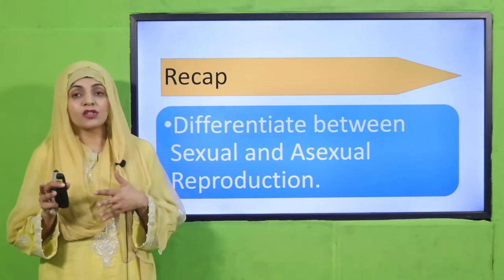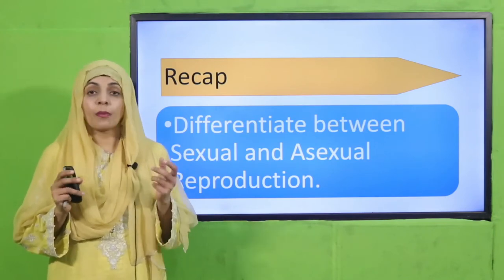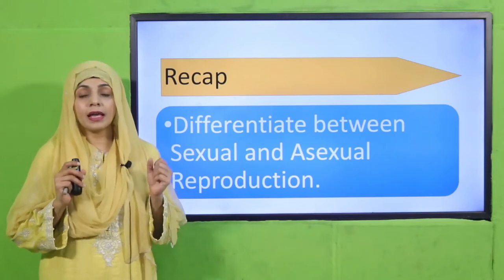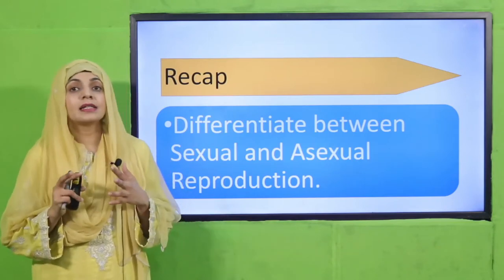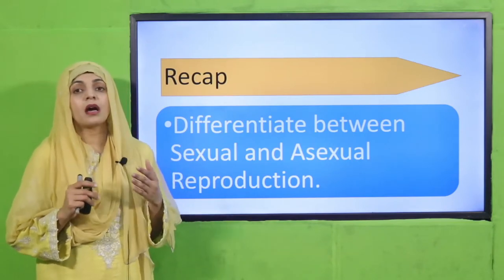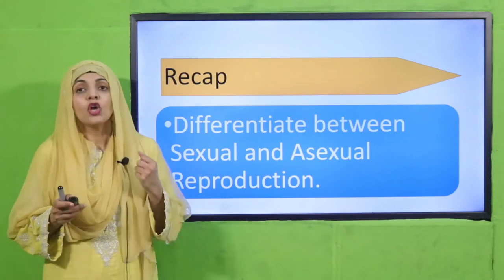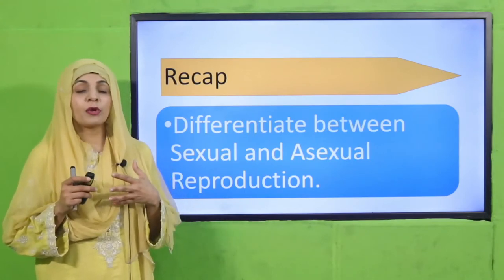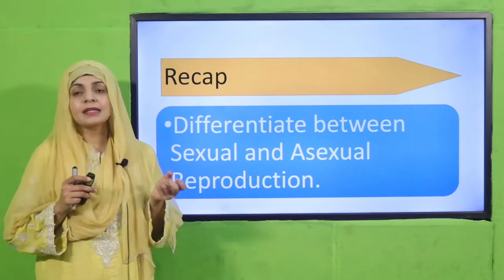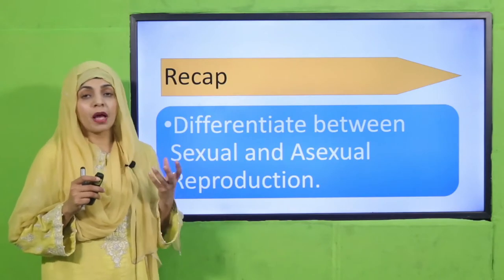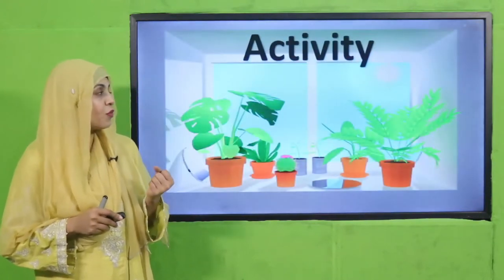In sexual reproduction, more time is required and fewer plants grow from seeds. In asexual reproduction, the resultant plants are copies of their parents, while in sexual reproduction there is slight variation. Examples of asexual reproduction include onion, garlic, rose, and strawberries, whereas plants like mangoes and bananas have sexual reproduction.